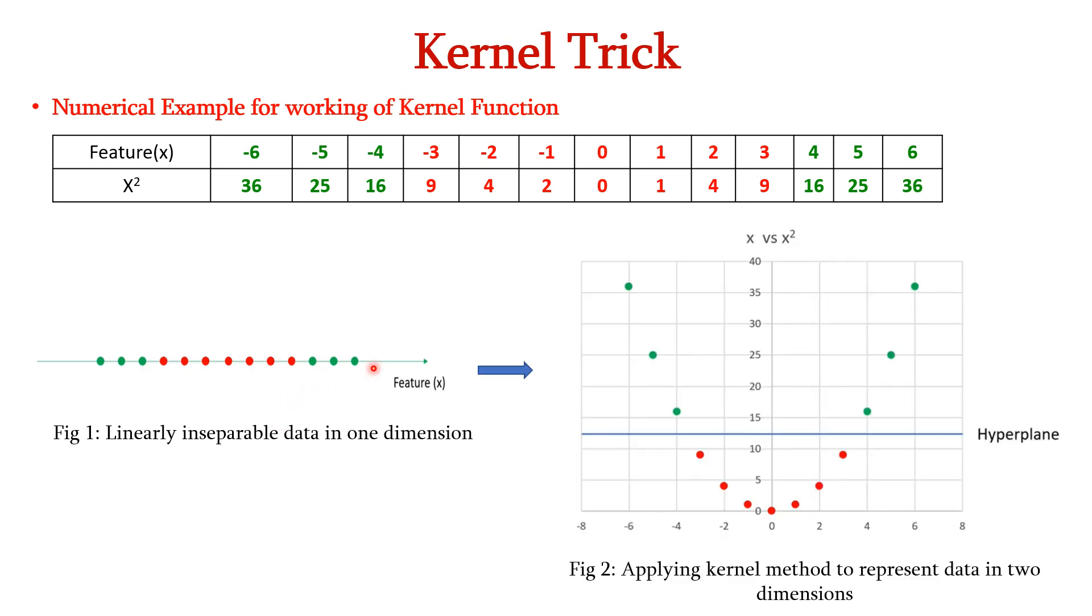So, we can transform this into a higher dimensional space by using the kernel function. So, we can square the feature x. If we square it, we have 36 here. So, 6 can be expressed as 36 and then 25, followed by 16, then 9, 4, 2 and 0, and this side we have 1 to 36.